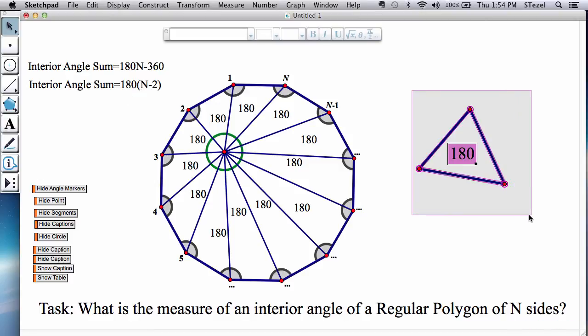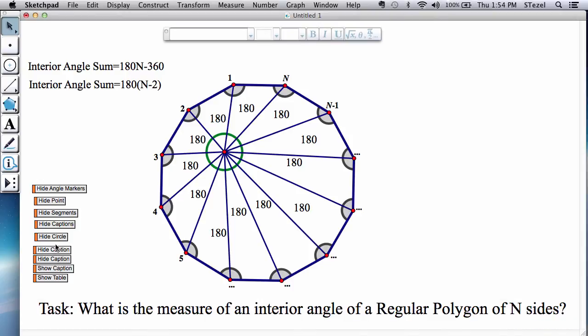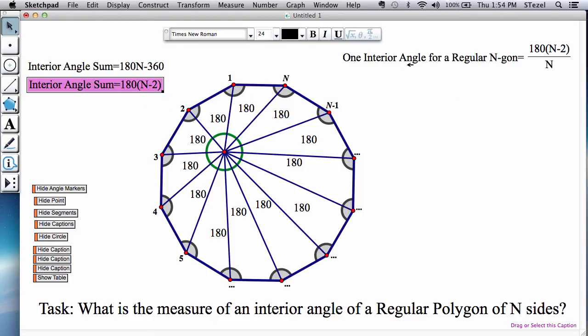This will allow us then to find the answer to the question we have asked originally, what's the measure of one of these angles. All we now have to do is divide this total that we had, the sum that we have, by n.